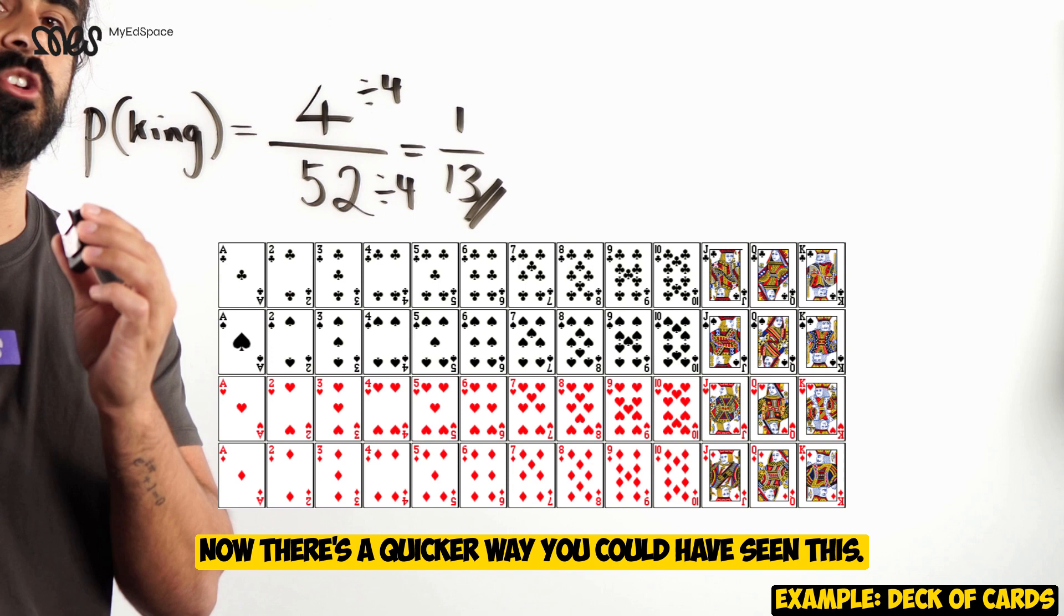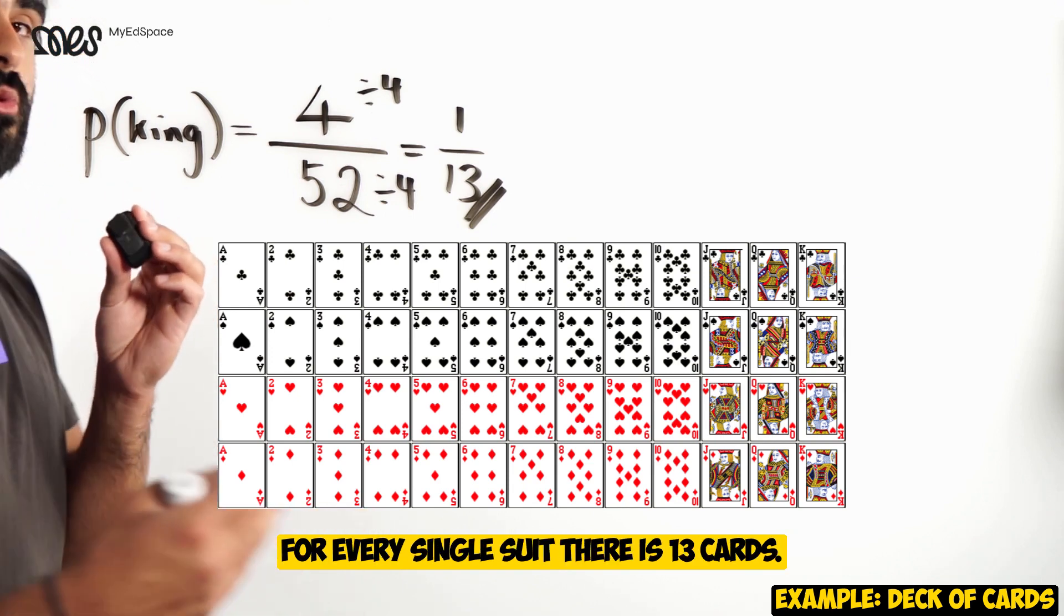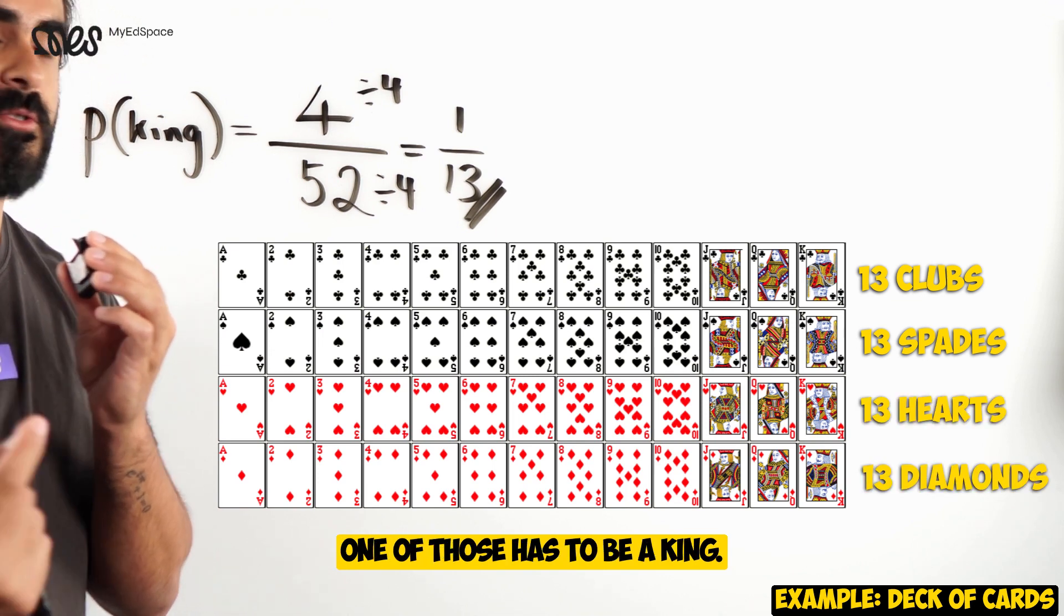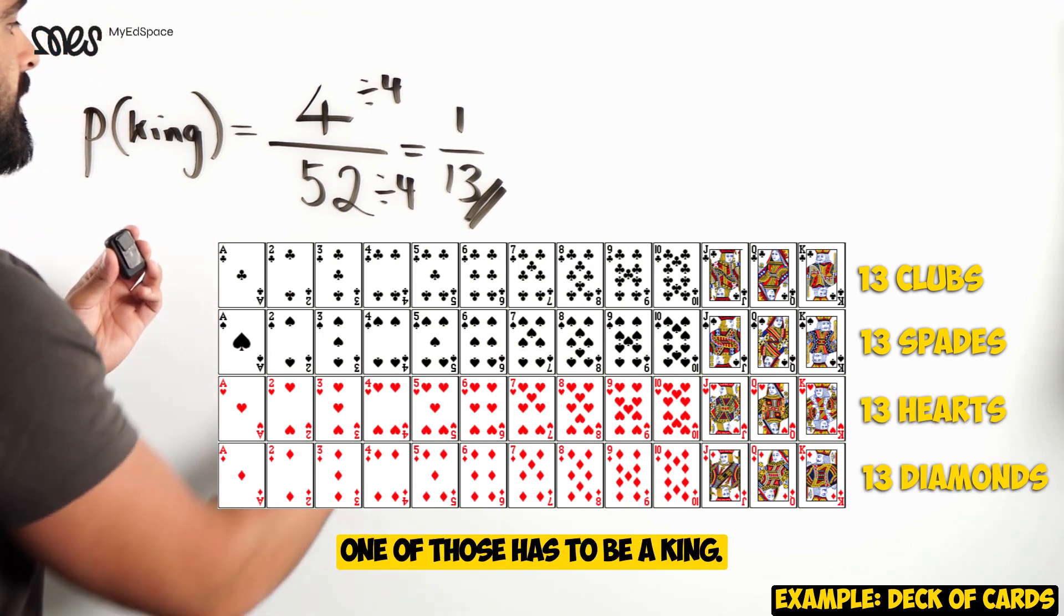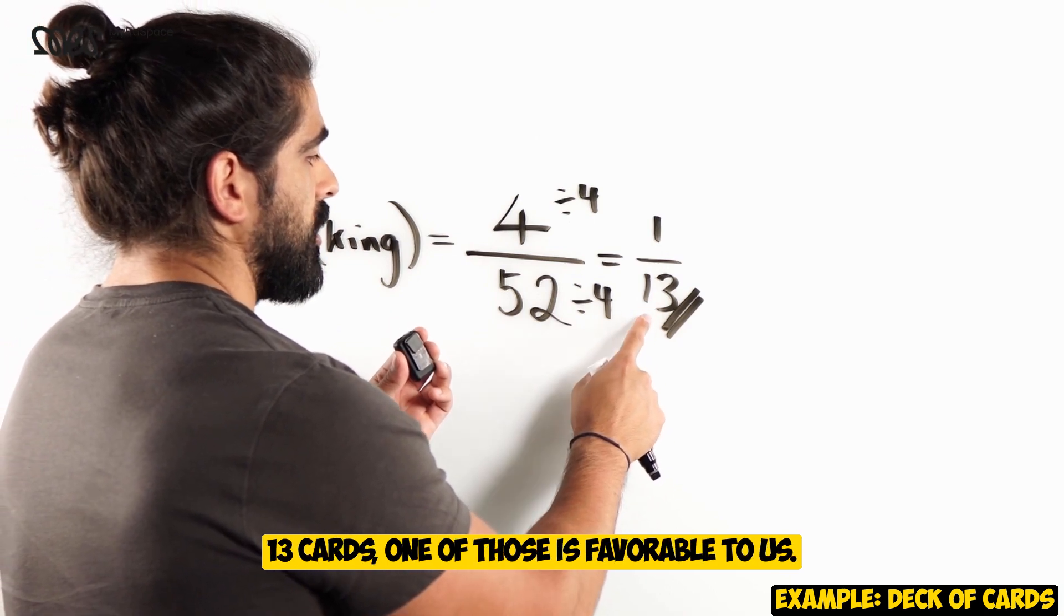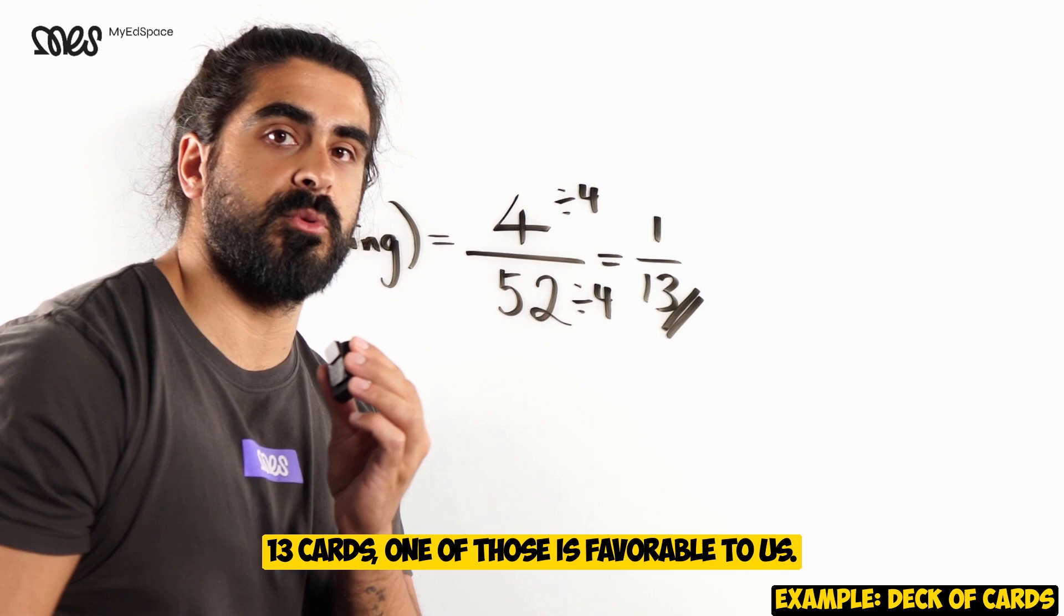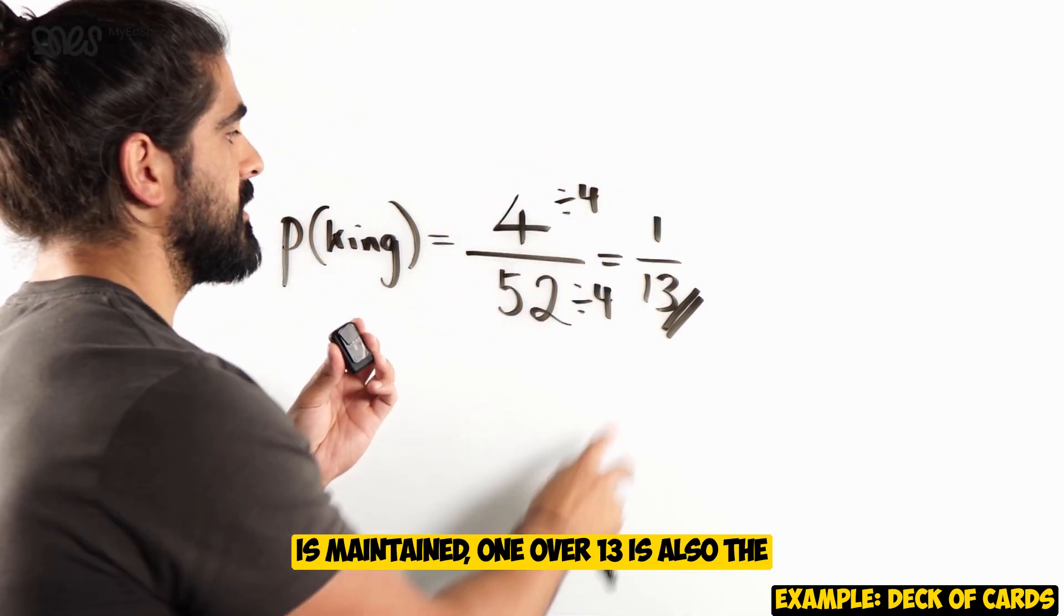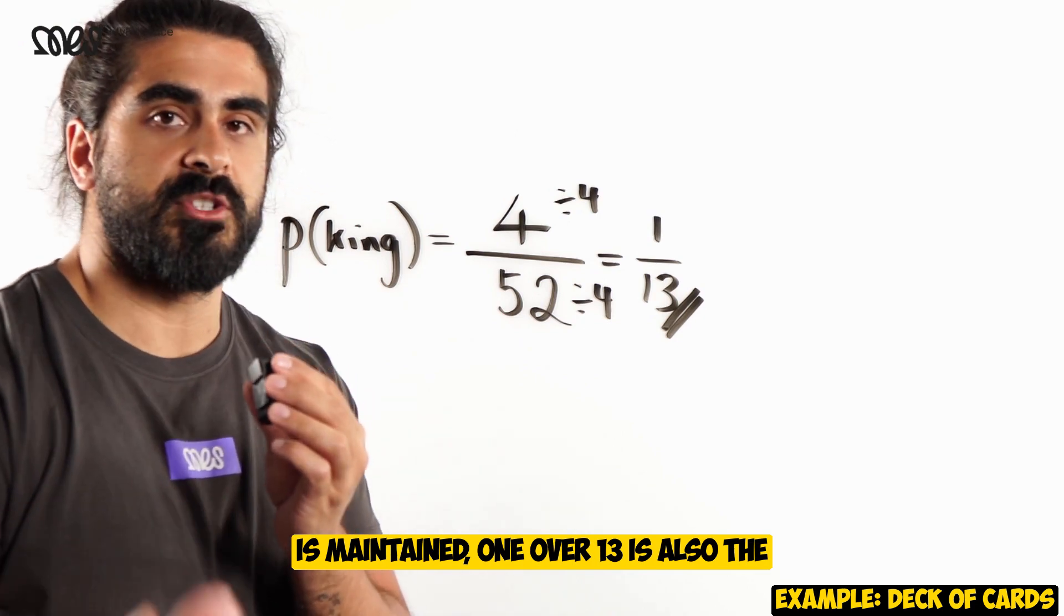Now, there's a quicker way you could have seen this. For every single suit, there is 13 cards. One of those has to be a king. So, we could have said, for every suit, there's 13 cards. One of those is favorable to us. And because for every single suit, the ratio is maintained, 1 over 13 is also the same, no matter which suit you talk about.